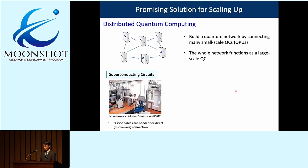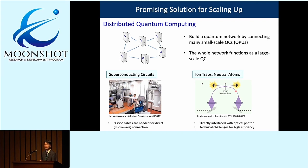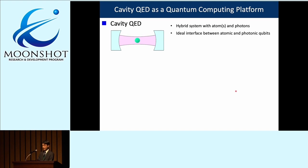For ion traps and neutral atoms, they can be interfaced directly to optical photons, which can be transmitted at room temperature without losing their quantum nature—so that's much more straightforward. However, there are still technical challenges for achieving high efficiency for connection in these platforms. We believe that cavity QED is advantageous in that respect, as it is a hybrid system of atoms and photons and an ideal interface between photonic qubits and atomic qubits for distributed quantum computing.